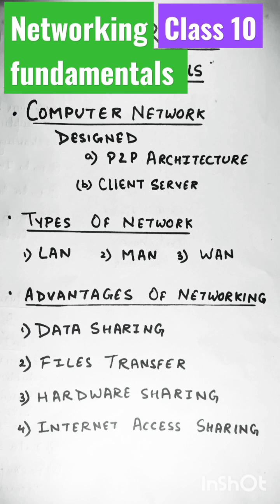These are called client-server networks. Next are the types of networks. The first is Local Area Network (LAN), which connects computers and devices in a limited area such as a home, school, computer lab, or office building. The second is Metropolitan Area Network (MAN).